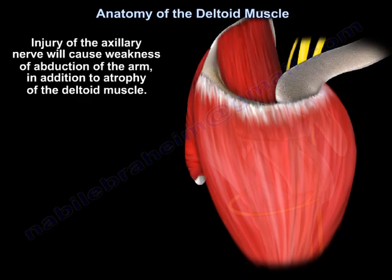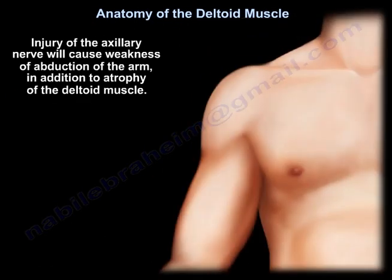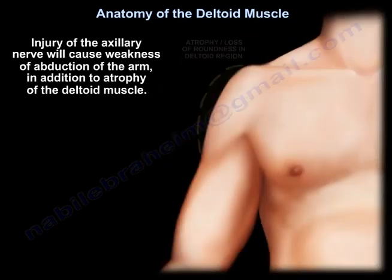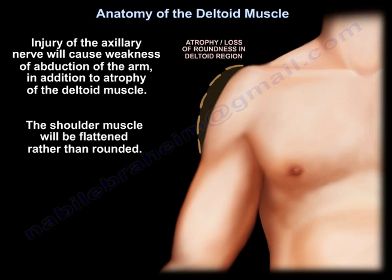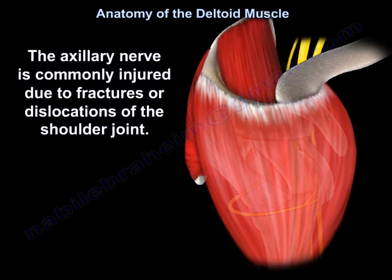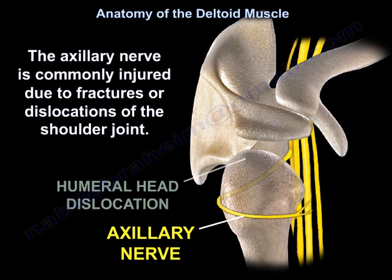Injury of the axillary nerve will cause weakness of abduction of the arm in addition to atrophy of the deltoid muscle. The shoulder muscle will be flattened rather than rounded, and there will also be loss of sensation over the shoulder area. The axillary nerve is commonly injured due to fractures or dislocation of the shoulder joint.